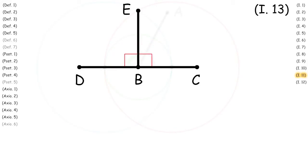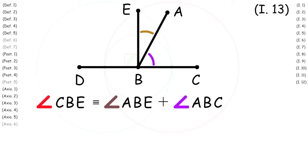Therefore angles DBE and CBE are right angles. Next looking at the right angle CBE we can see that it is actually congruent to angle ABE plus angle ABC.